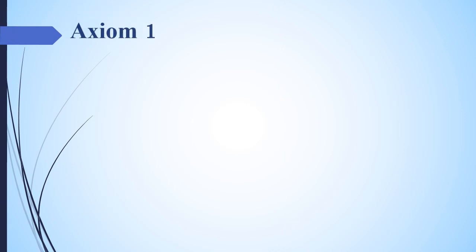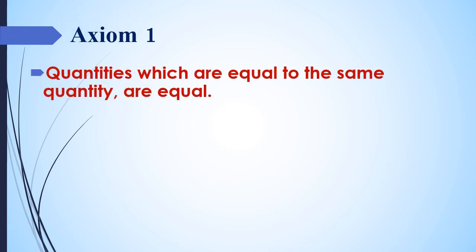Axiom number 1: Quantities which are equal to the same quantity are equal. Let's explain this from an example. In this, A equals B and A equals C. Then you can see all these quantities are equal to each other. Therefore, we can say quantity B is equal to quantity C.